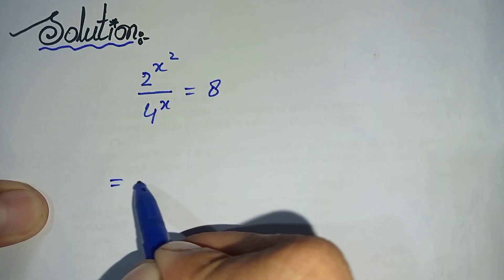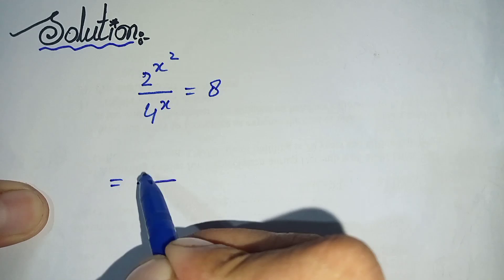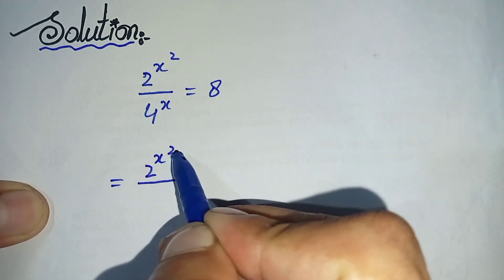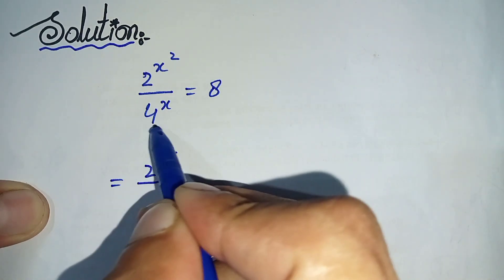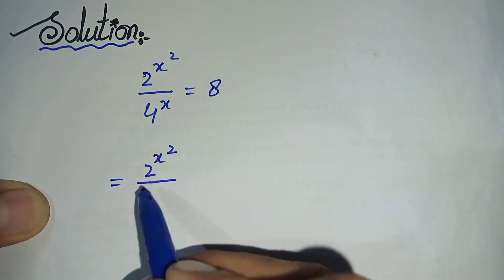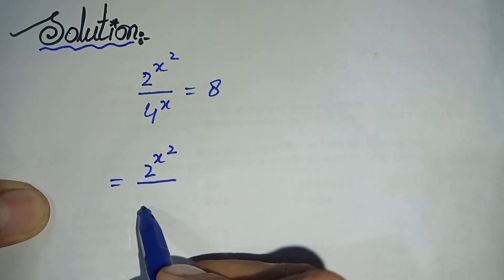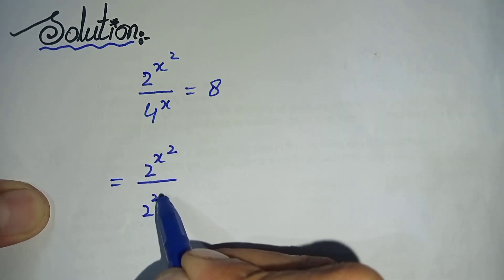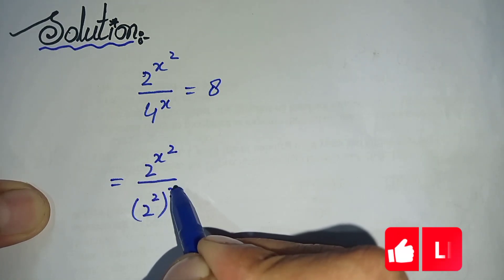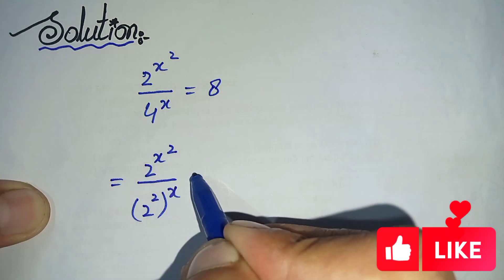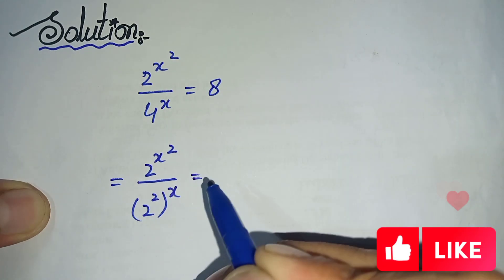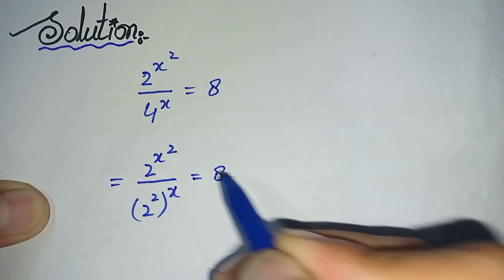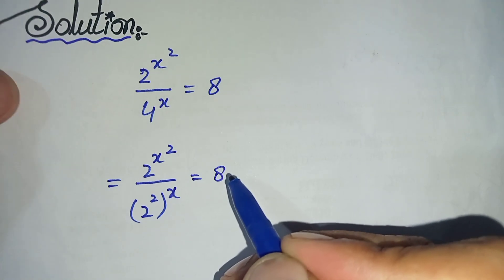We will write 2 raised to power x squared as the same, and we can write 4 as 2 raised to power 2, whole raised to power x, is equal to 8.